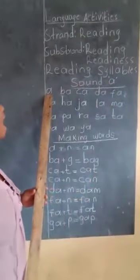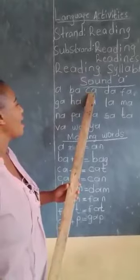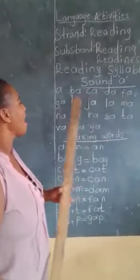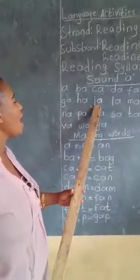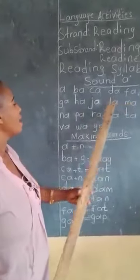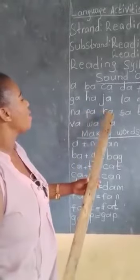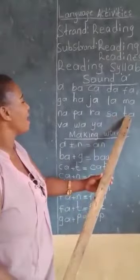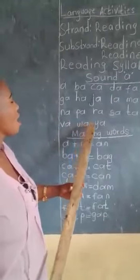Let's start. A, ba, ka, da, fa, ga, ha, ja, la, ma, na, pa, ra, sa, ta, va, wa, ya.